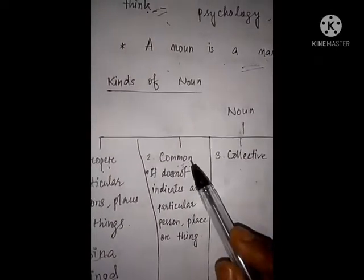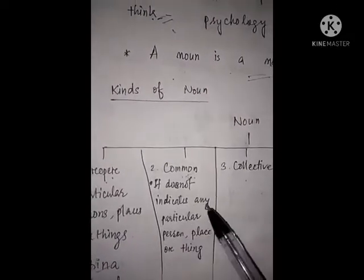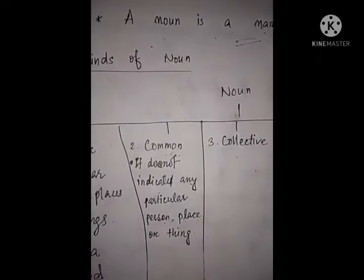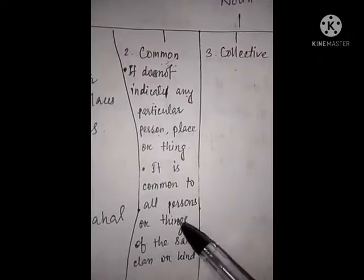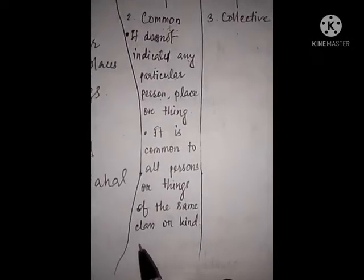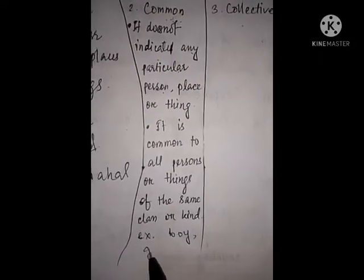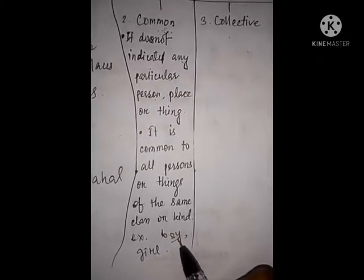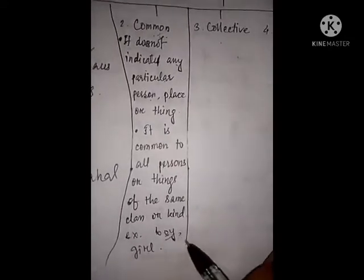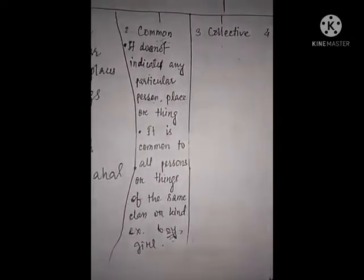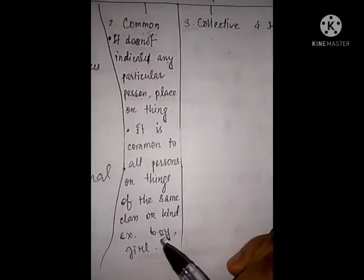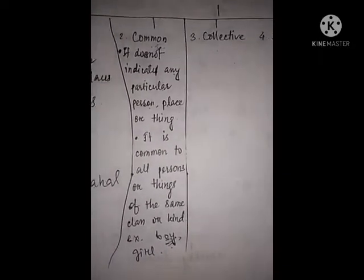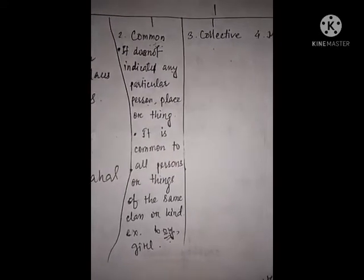About common noun, you have to remember: number one — it does not indicate any particular person, place, or thing. Second point — it is common to all persons or things of the same class or kind. Example: boy. If we say 'boy,' this does not indicate any particular boy. It indicates all the boys of this world. So it is common to all persons of the same class.